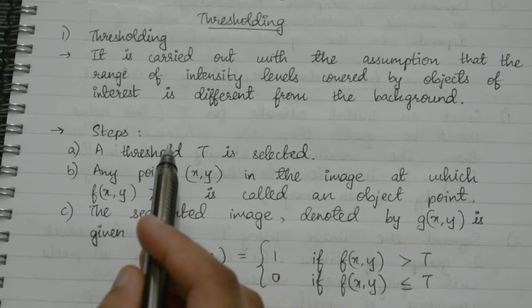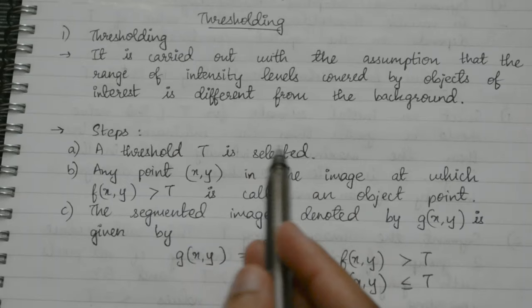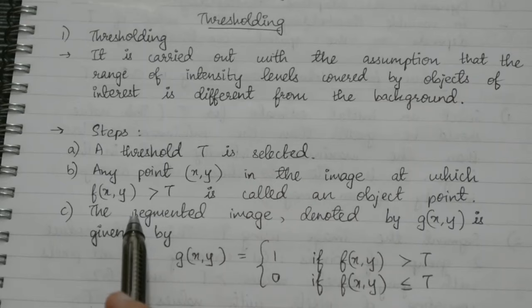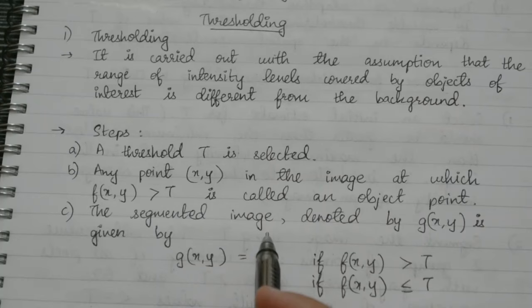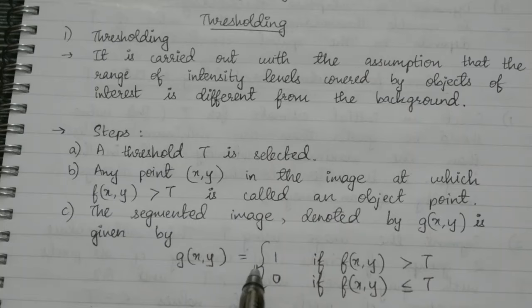The steps for thresholding are: first, a threshold t is selected. Then any point x, y in the image at which f(x, y) is greater than t is called an object point. The segmented image, denoted by g(x, y), is given by: g(x, y) equals 1 if f(x, y) is greater than t, and equals 0 if f(x, y) is less than or equal to t.